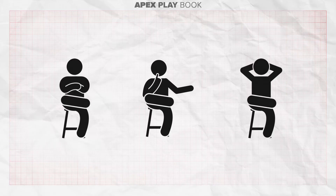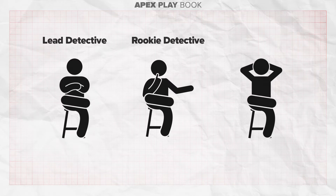The scenario is this: it's an interview room at a police station. You have three characters — a lead detective, a rookie detective, and a criminal — who have to improvise a scene. The lead detective may be powerful and controlling. The rookie detective may be clumsy and clueless. The criminal may be angry, rebellious, and urgent to leave.